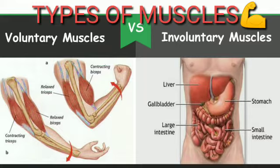Now we shall learn about involuntary muscles. The muscles that do not work under our will are called involuntary muscles. Various processes like breathing, blood circulation, and digestion are vital functions — they are essential for life and do not depend upon our will. The muscles of organs which carry out these involuntary functions are called involuntary muscles. Functions of organs like the stomach, intestine, and heart are carried out in their own fixed manner by involuntary muscles.